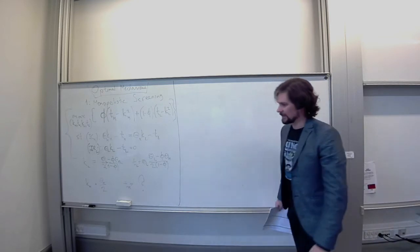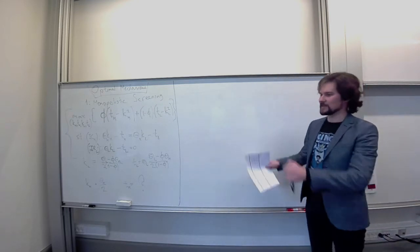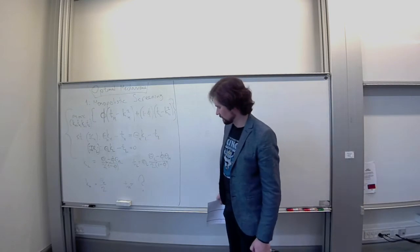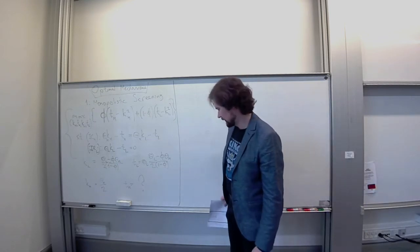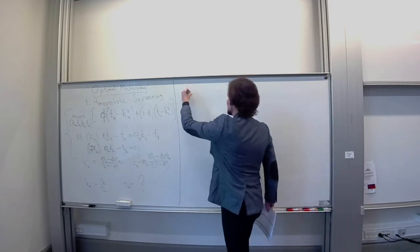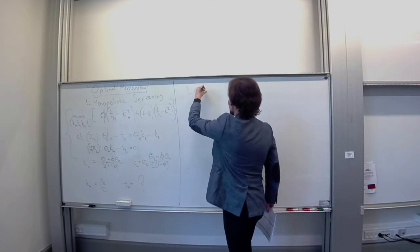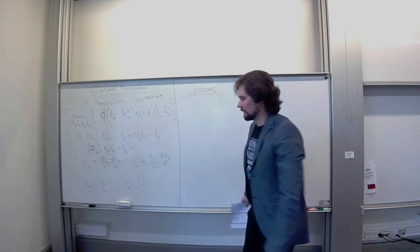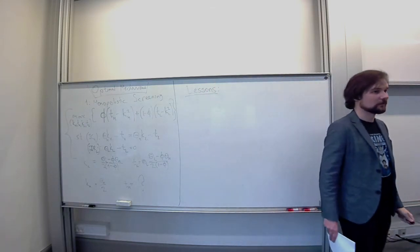But the takeaway here. We can still make some takeaways. Maybe TH will not be too important for our takeaways here. But what lessons can we extract from this very simple example with only two types?